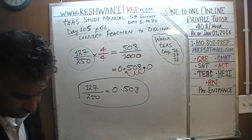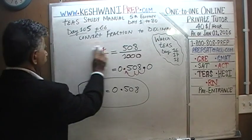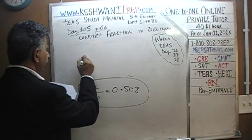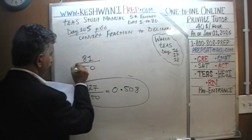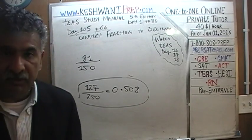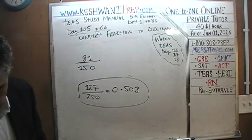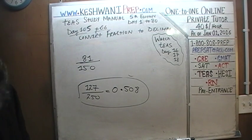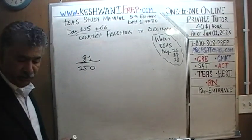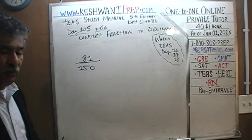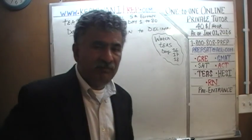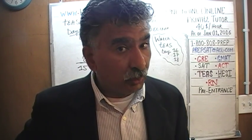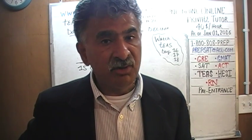Let's do one more. Pause the video and try it yourself: 81 over 150. There's not much we can do directly — it's already more than 100, and 150 times no whole number gives us a clean power of ten. We have a problem. What we could do is try to reduce the fraction first.